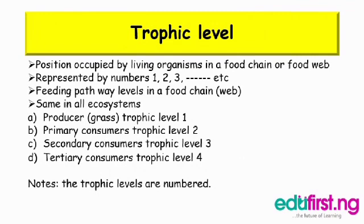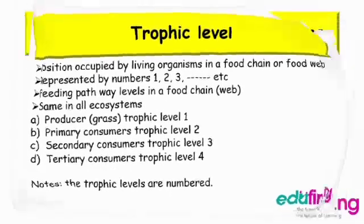So we're going to look at the trophic level. A trophic level is the position occupied by living organisms in a food chain or food web, represented by numbers 1, 2, 3, etc. Feeding pathway levels in a food chain: in all ecosystems, producer grasses are trophic level 1, primary consumer is trophic level 2, secondary consumer is trophic level 3, and tertiary consumer is trophic level 4. Note that the trophic levels are numbered.